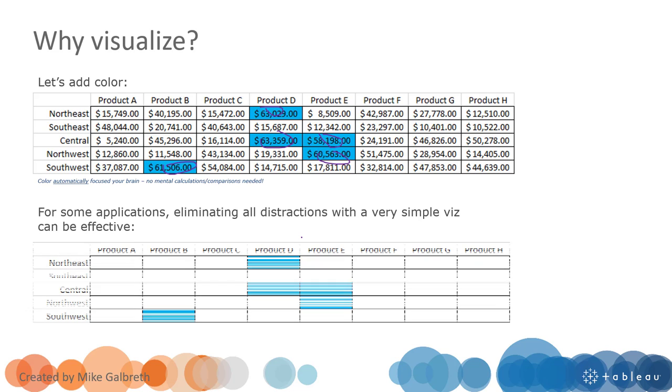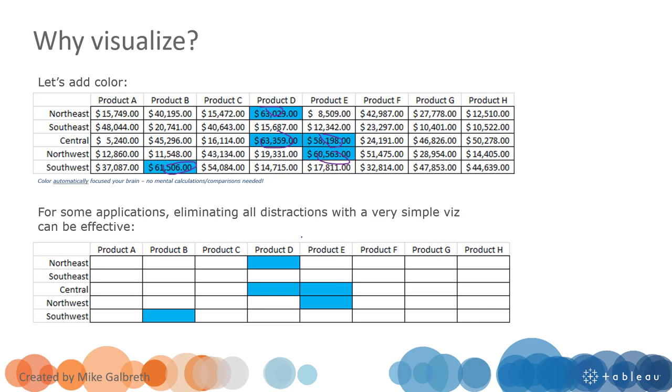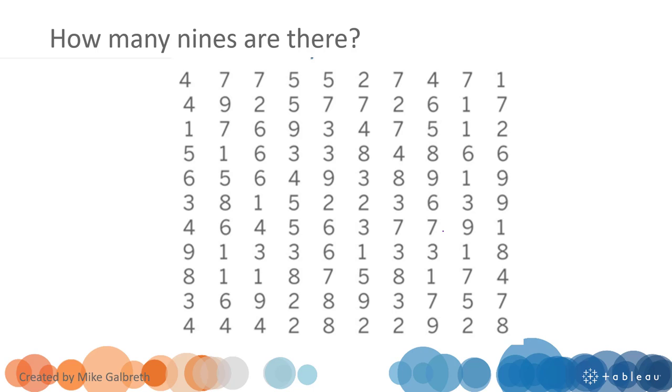What if we just simply remove all the numbers and just give you colors? This time I think it's pretty easy to identify and also remember those top five products and regions. Another example of using color or visualization...